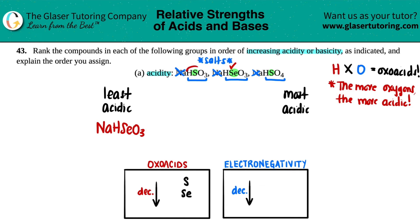Since it's just HSO3 versus HSO4, since this one has one more oxygen - it's got four oxygens versus three - this one would be more acidic and that would be most acidic. So we have NaHSO4 here.